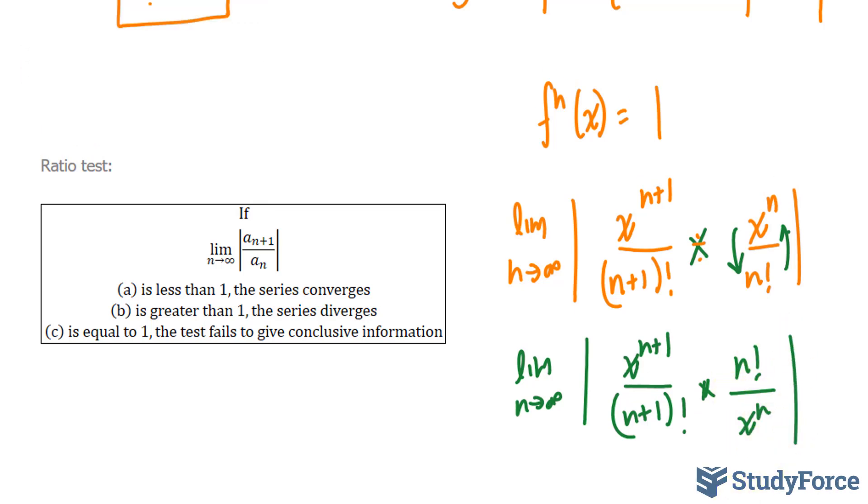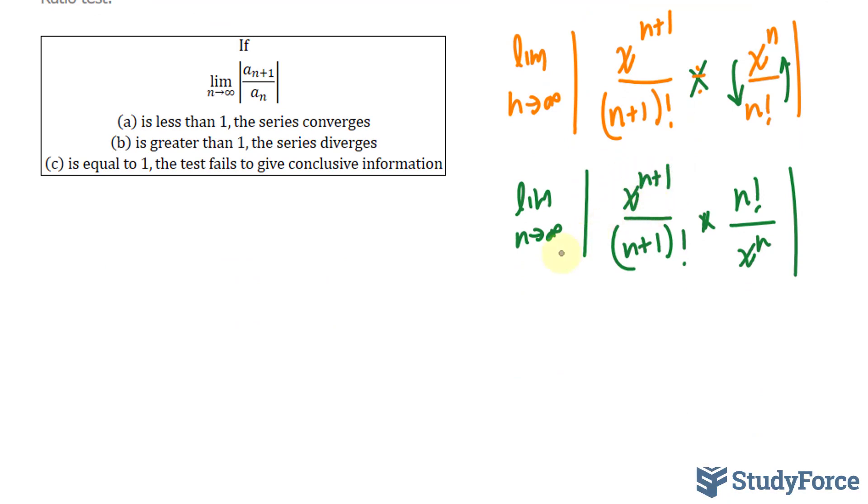Now if you're familiar with the laws of exponents, and you should be, x to the power of n plus 1 is the same thing as saying x to the power of n and x to the power of 1. That means this x to the power of n and this one will cancel out.